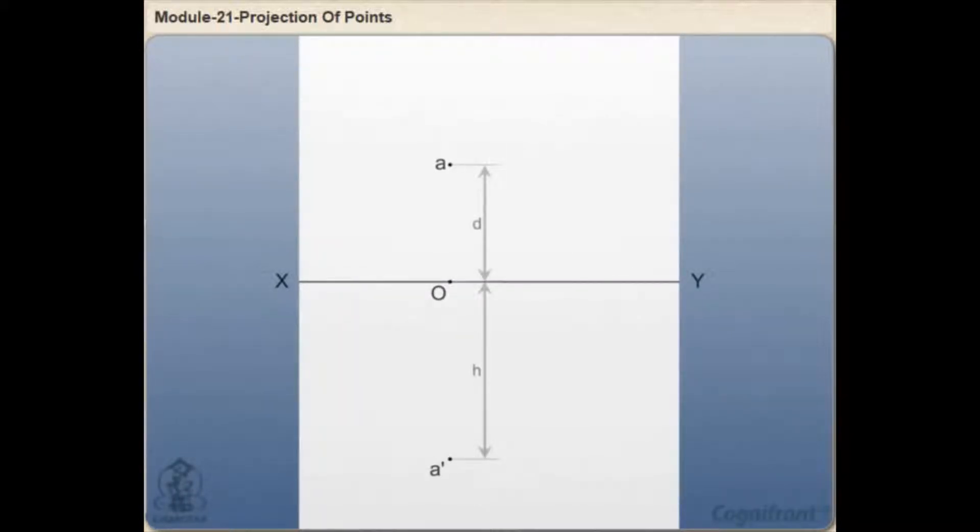The point A and A dash represent the images of the object on VP and HP respectively. The line joining A and A dash is the projector line and is perpendicular to the reference line XY.